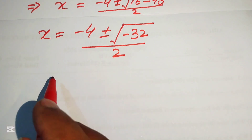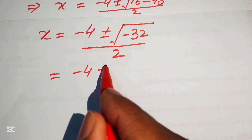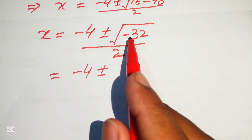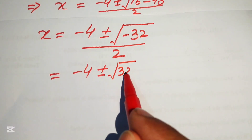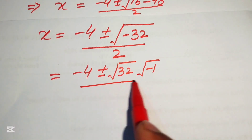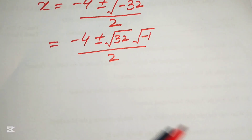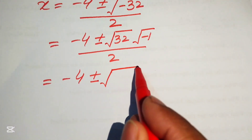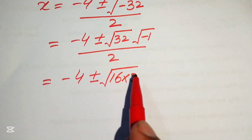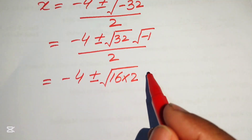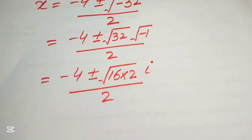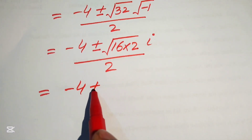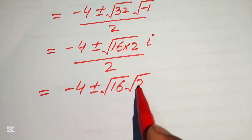We separate the negative sign inside the square root. We write square root of negative 32 as square root of 32 times square root of negative 1. Since square root of negative 1 equals i (iota), and 32 equals 16 times 2, we have square root of 16 times square root of 2 times i, divided by 2.